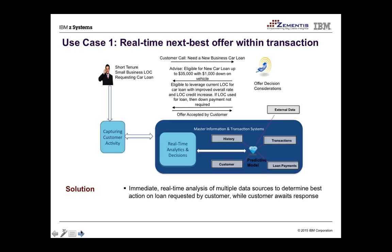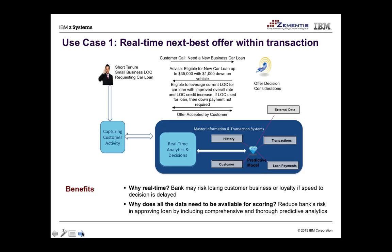The solution is to put Zementis directly within the transaction — embedding the ability to do a predictive score in real time. When the inquiry comes in, instead of just processing that specific request, a next best action scenario — potentially a set of models — looks at the relationship the client has with the bank, pulls in data from various sources, sees the better opportunity, packages it together, and delivers it all within the scope of the transaction.